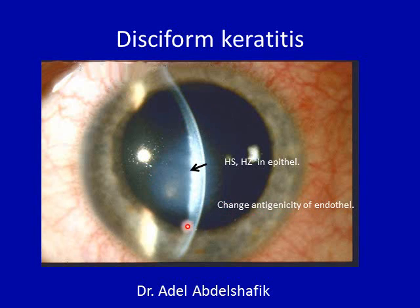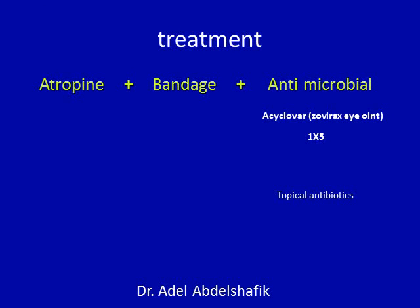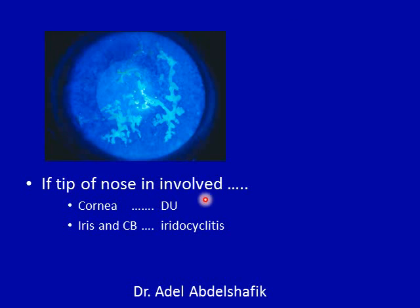We have to give steroids to cure this condition. To avoid exacerbation of the virus in the epithelium, we combine the steroids with topical antiviral treatment. Another example shows a disc-shaped opacity due to increased thickness of the cornea — this is an antigen-antibody reaction of the endothelium. Also, this type of organism is known to affect the iris and ciliary body, causing iridocyclitis.